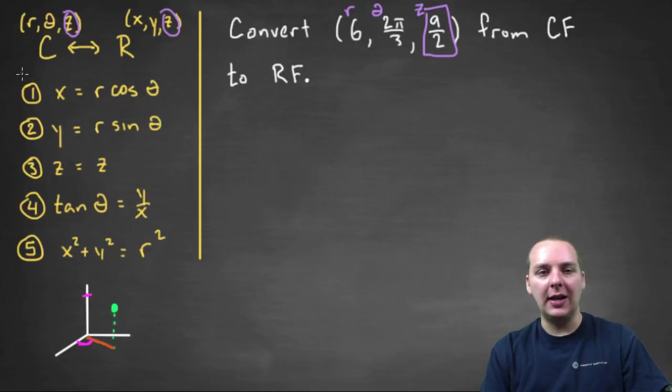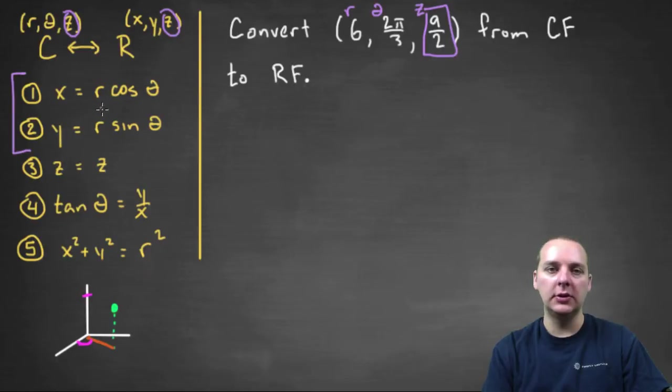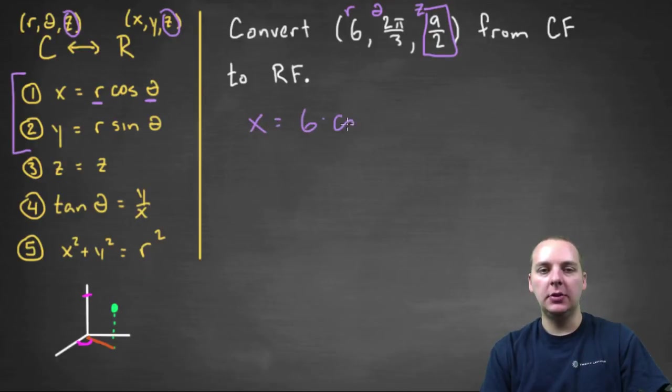I think our first two conversions will do the trick. We're going to plug R and theta into R cosine theta to get X and R sine theta to get Y, and we'll be done. So X would be R, which is 6, times the cosine of 2π over 3.